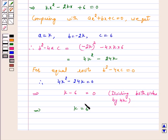Hence, the given quadratic equation has equal roots if k is equal to 6. Therefore, k is equal to 6 is the answer for the given question.